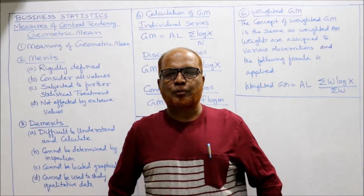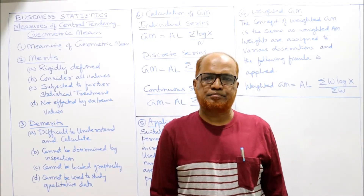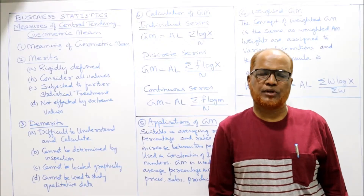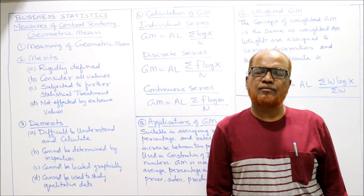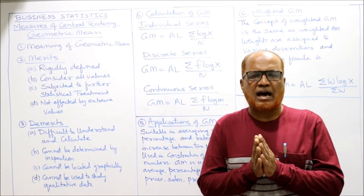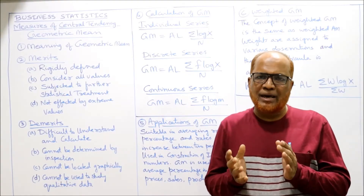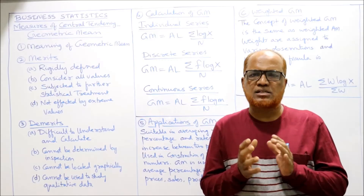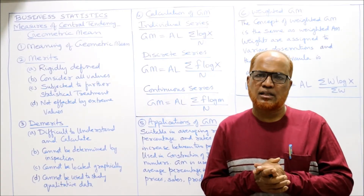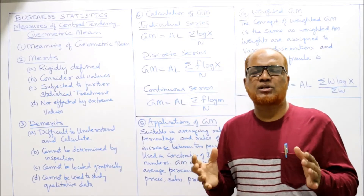Hello students, now we'll start the next topic of our subject Business Statistics. So far we have completed the three measures of central tendency: arithmetic mean, median, and mode. We have seen the merits and demerits of each and applied different formulas. Now we are moving on to the next average — Geometric Mean. In this video I'm going to explain the meaning of geometric mean, its merits and demerits, methods of calculating it for individual, discrete, and continuous series, application areas, and lastly weighted geometric mean.